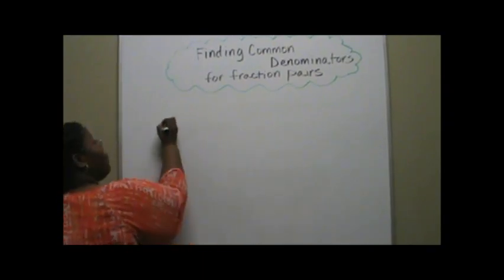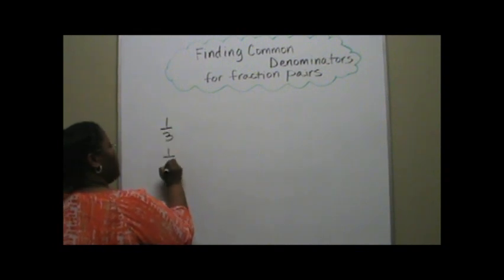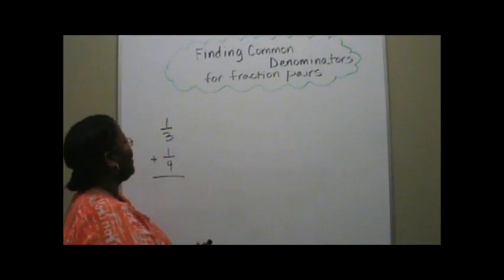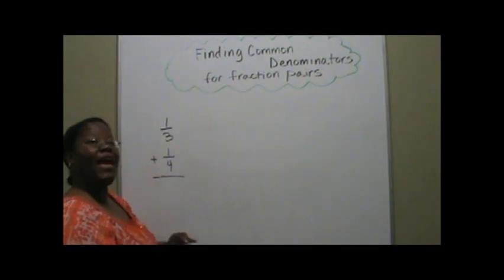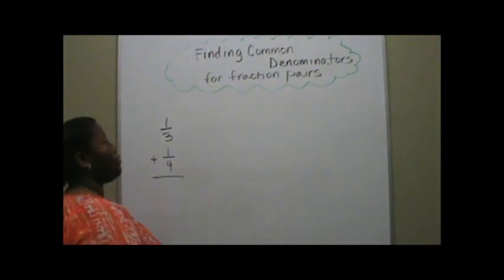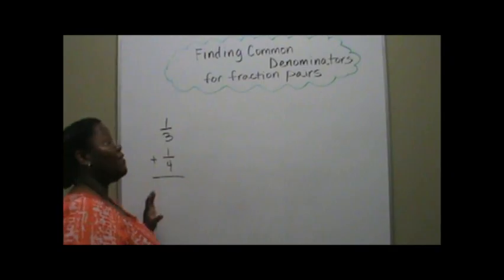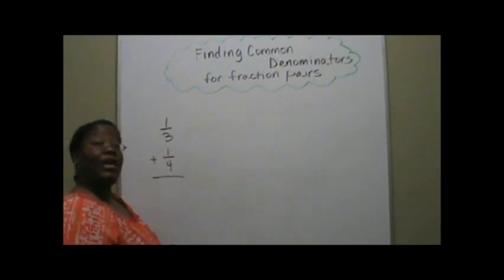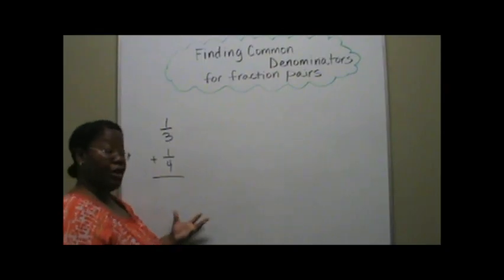You have one-third and one-fourth. Well, we can't just add those, because the denominators are different and we have to have like denominators. And what we're going to learn in this lesson is how to find like denominators, and the way you do that is by finding the multiples of the numbers.